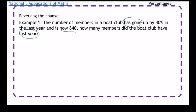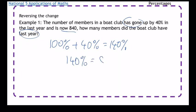Our answer should be less than 840. The way I'm going to do this is we've got 100%, and it's gone up by 40%, so I'm going to add on 40%. That's 140%. I'm going to stop there, unlike the previous ones. So that 140% is equal to 840.